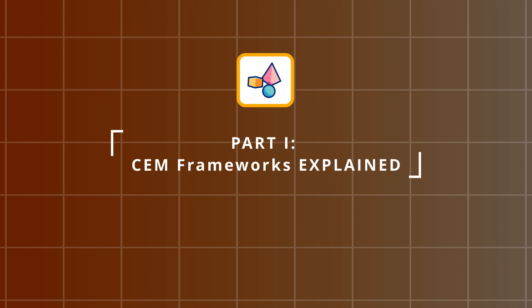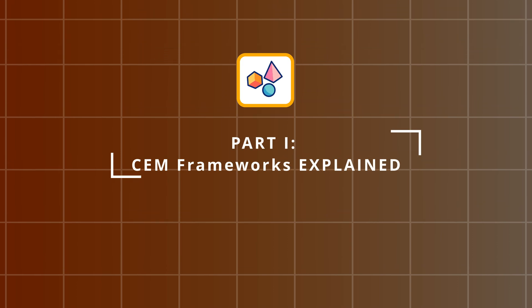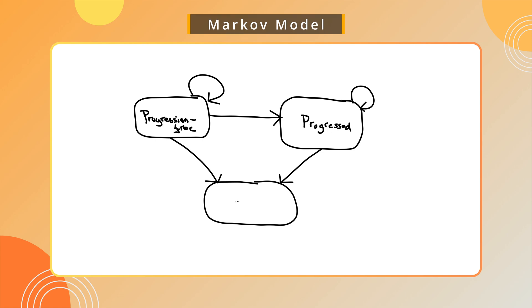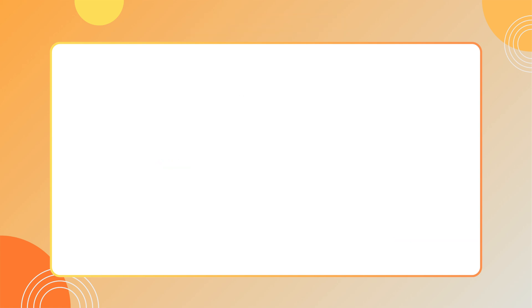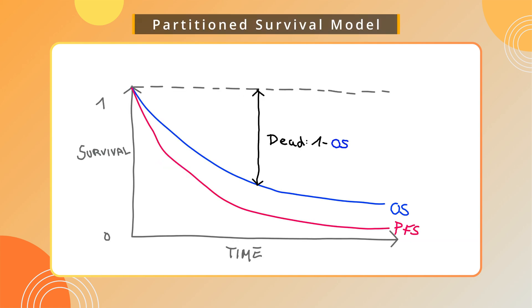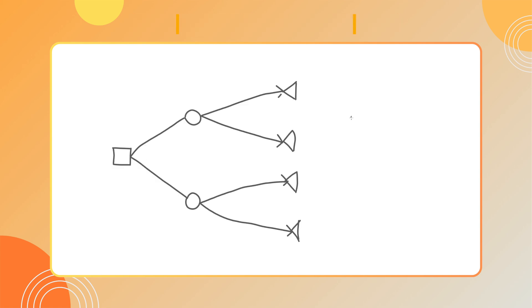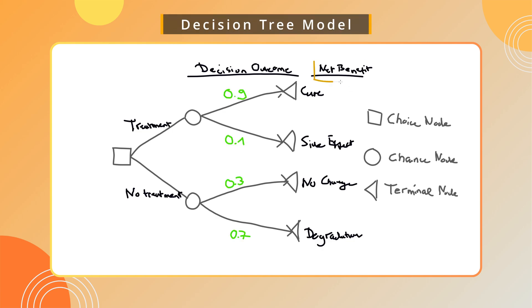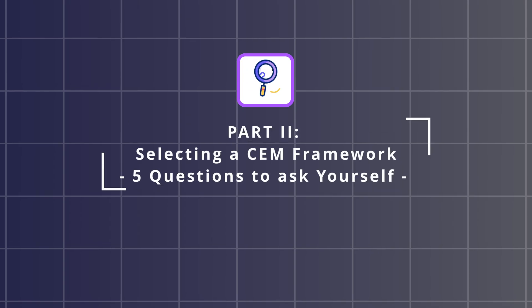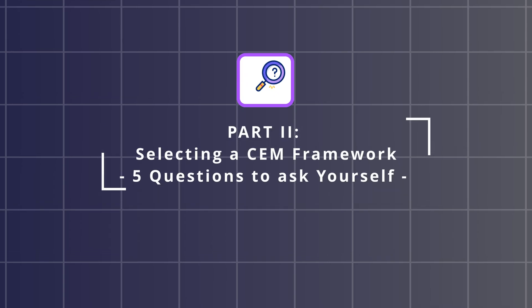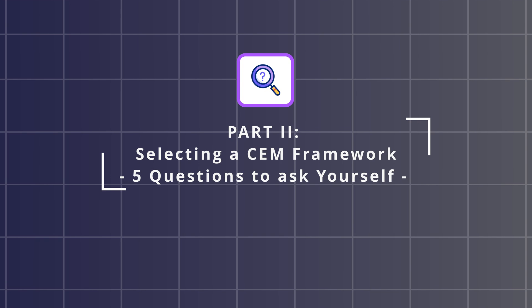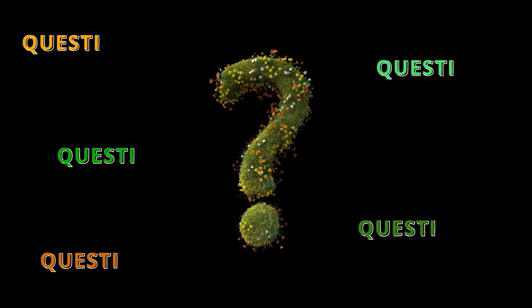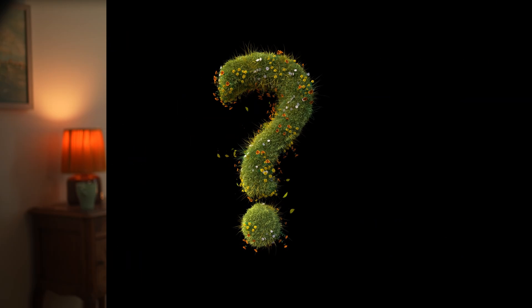I'll be doing this in two parts. In the first part I'm going to run through eight different types of CEMs, which include Markov models, partition survival models, decision trees, and more. This will give you a basic understanding of how these models work. In the second part I'll propose a set of five questions that you can answer for yourself, which will guide you in selecting the best CEM type for your decision problem.